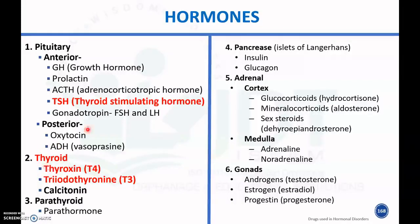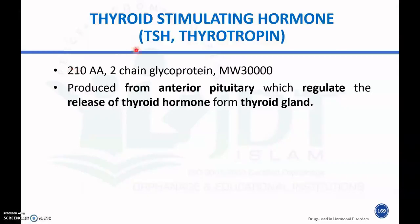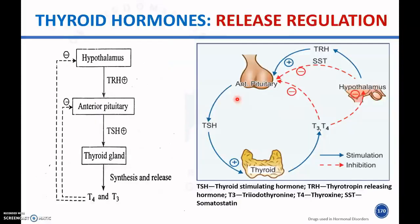Thyroid hormones are secreted by the thyroid gland under the influence of thyroid stimulating hormone, which is produced from the anterior pituitary gland. Thyroid stimulating hormone is an anterior pituitary hormone that regulates the release of thyroid hormone from the thyroid gland.